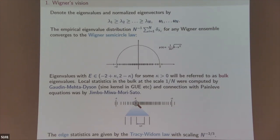[Audience question: what do you mean by highly correlated?] There is no precise definition. The motivation was heavy nuclei: all neutrons have a lot of interaction with each other. You can imagine everyone interacting in a very strong way. It's just a picture — it's not rigorous.